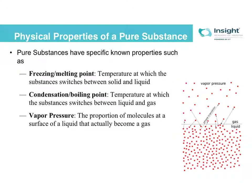Just to review some of the physical properties of a pure substance: before our solution is made, we have our solvent and our solute, which are pure substances before they're combined. They're then turned into a solution through a physical mixing process. The substances prior to being mixed have their own inherent freezing and melting points. Freezing or melting point is the temperature at which the conversion between solid and liquid occurs.